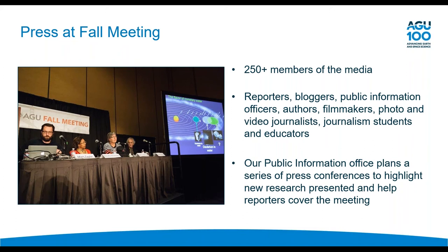The press operation at the fall meeting is pretty large — we regularly get about 250 or more members of the media, including staff reporters, freelancers, science bloggers, podcasters, public information officers, authors, filmmakers, photo and video journalists, and journalism students and educators. The public information office puts together a series of press events to help reporters cover the science being presented and to highlight new research.